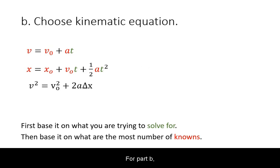For part B, we can choose either of the first two equations because now we have only one unknown time and we either explicitly or implicitly know all the other variables.